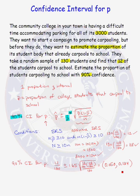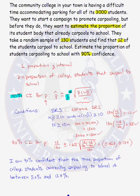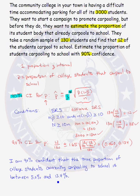We want to write our confidence interval in an English statement. The English statement is: I am 90% confident that the true proportion of college students currently carpooling to school is between 5% and 13.4%.